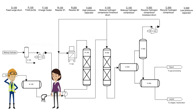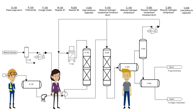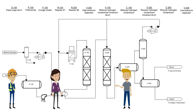What kind of impurities could there be in the feed? One concern is sulfur or nitrogen in the feed. Hydro-treating is required to remove sulfur or nitrogen. Depending on the catalyst used in the reactor, pre-treating to remove these impurities may be required to prevent poisoning the catalyst.